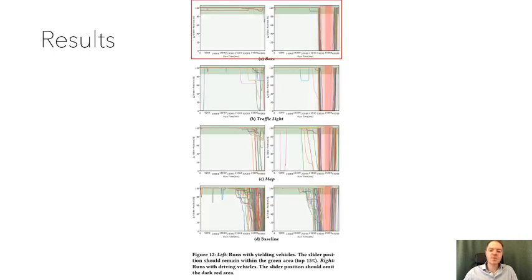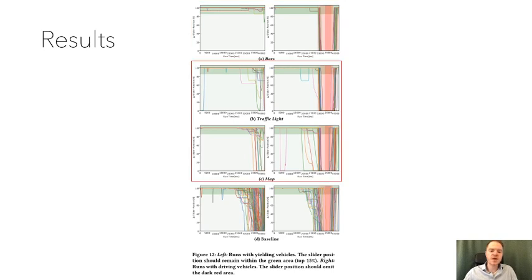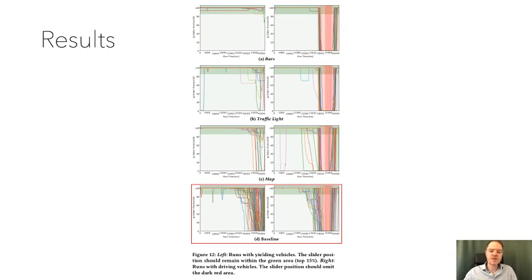In this graph we see all participants' inputs mapped on the previously empty graph on the right side. On the left there are cases where the vehicle yielded, so it was always safe to cross. The bars concept leads to a rather clean and structured output. The traffic light and map concepts show more clutter and irregularities. The baseline means no guidance on the smartphone and leads to an almost chaotic output.